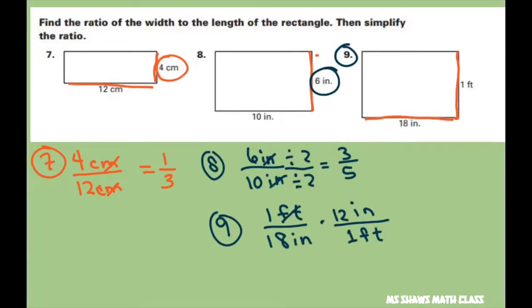So now I can cross out the feet and the inches. So I have twelve to eighteen. And that's going to reduce if you divide the numerator and the denominator by six. That gives you two to three.